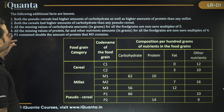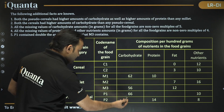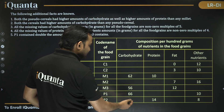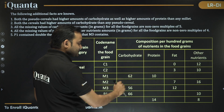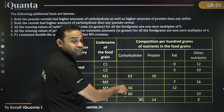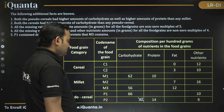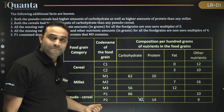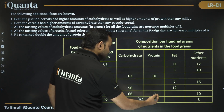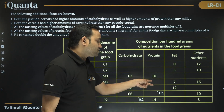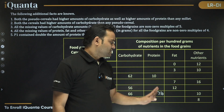Clue 1: Both pseudo cereals had higher amounts of carbohydrate as well as higher amounts of protein than any millet. So each of P1 and P2 must have higher carbs and protein than all of M1, M2, M3. The highest millet carb so far is 62, so pseudo cereal carbs must be greater than 62. For protein, since M3 is already 14, P1 protein must be greater than 10 — we'll adjust as needed.